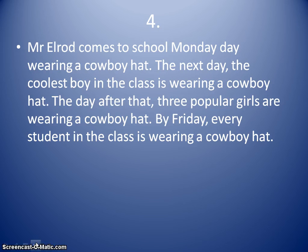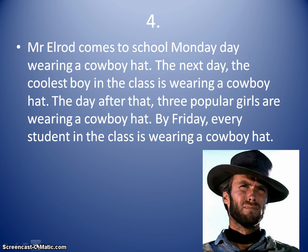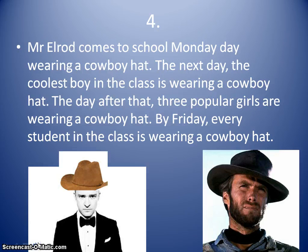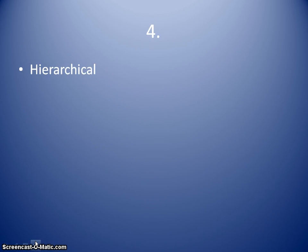In our last example, Mr. Elrod comes to school Monday wearing a cowboy hat. The next day, the coolest boy in the class is wearing a cowboy hat. The day after that, three popular girls are wearing a cowboy hat. By Friday, every student in the class is wearing a cowboy hat — everybody's caught on to the fashion trend. Clearly Justin Timberlake shows up the next day wearing the cowboy hat, and then it takes on from there. This is hierarchical diffusion — moving from Mr. Elrod, then the cool kids catch on, and then it moves through the rest of the population to the least coolest kid in the class.